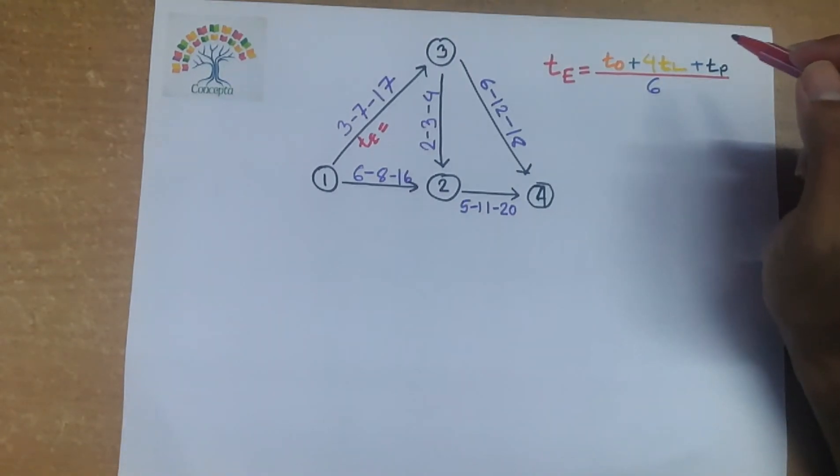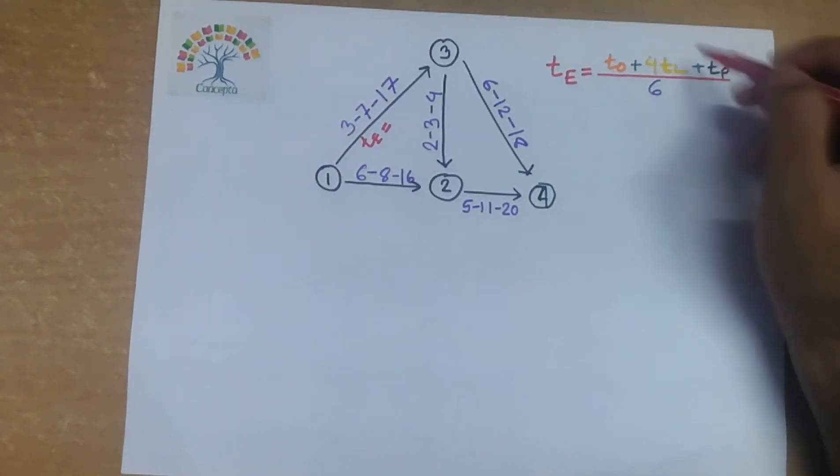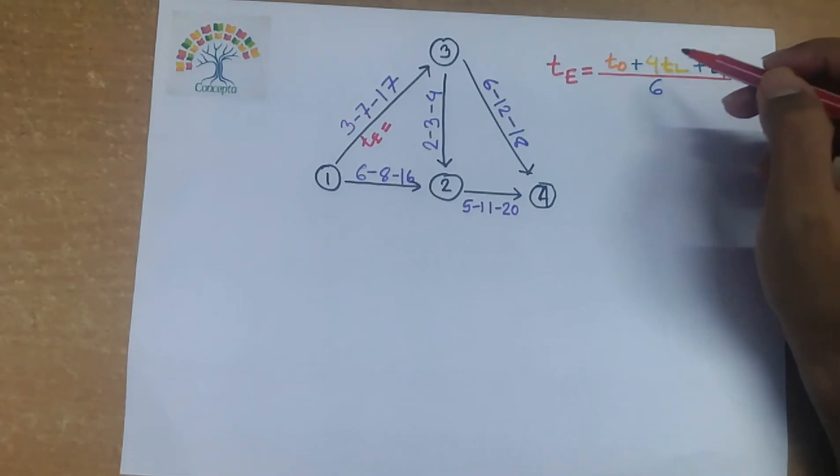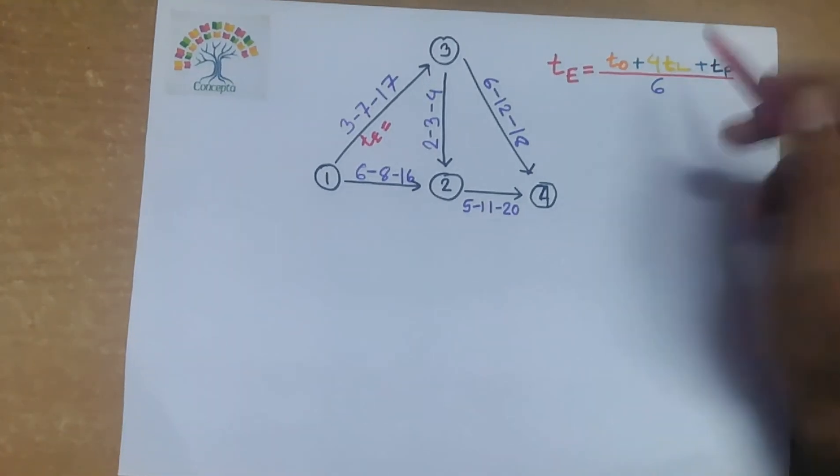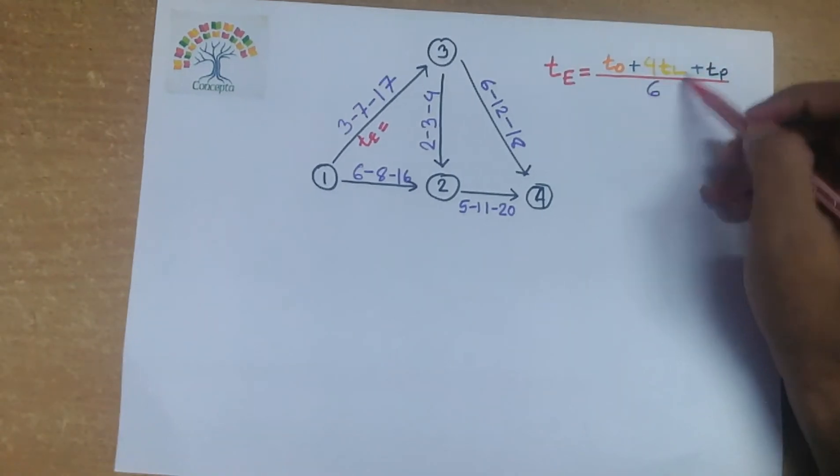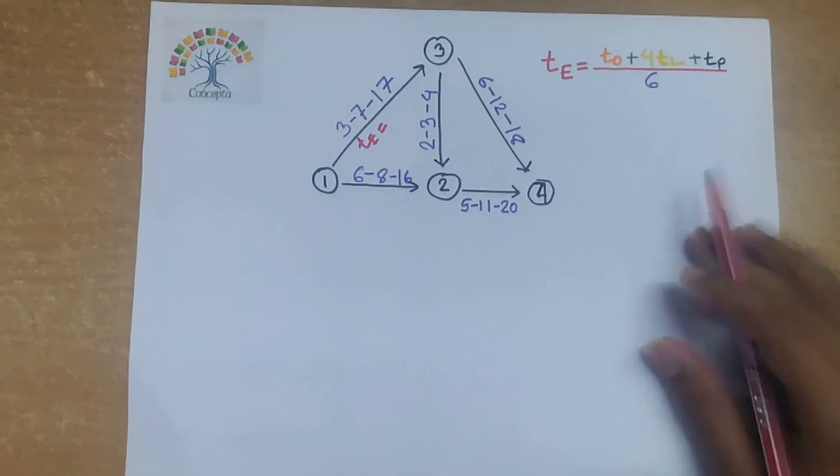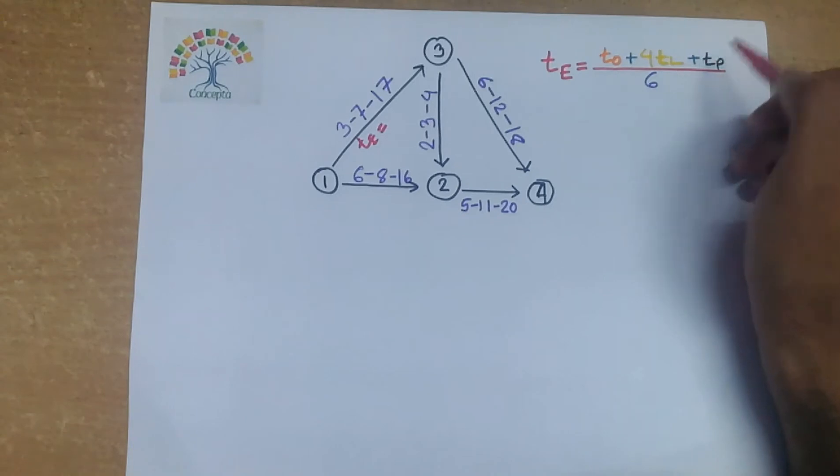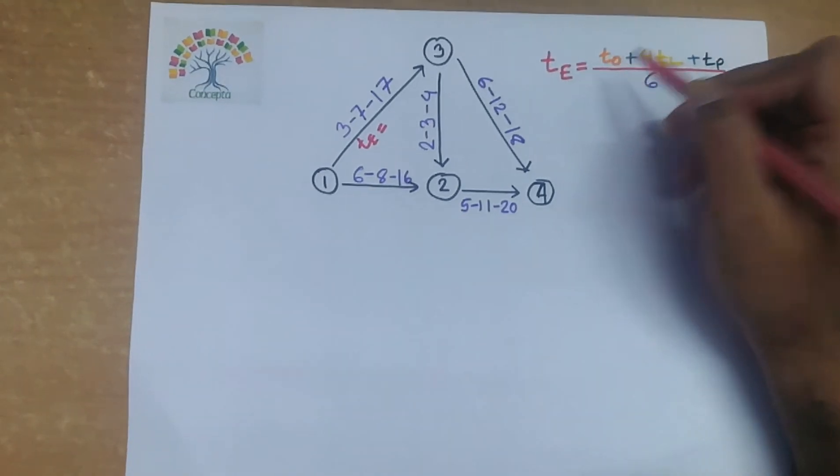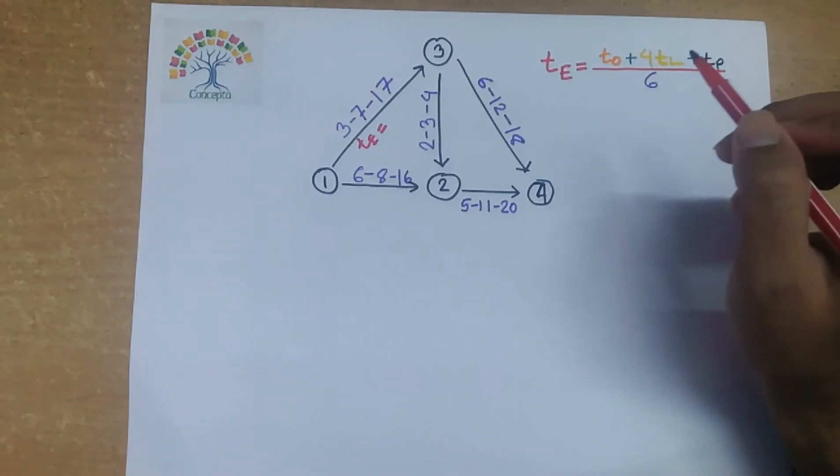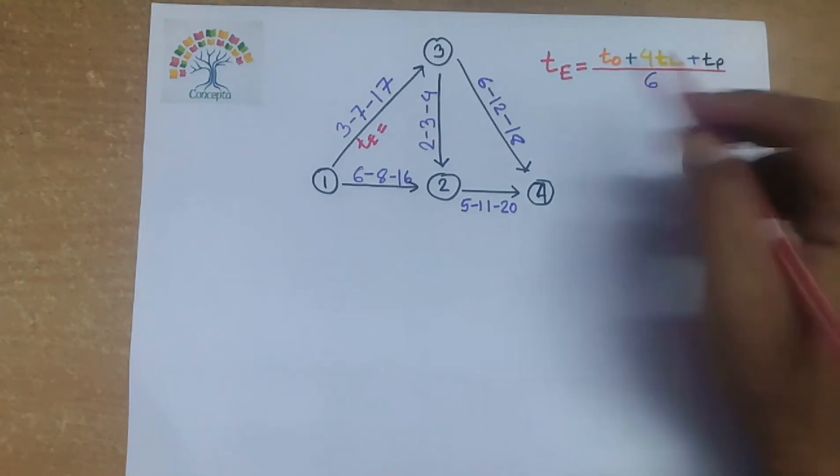Maximum people complete a work within this time, that is tl, so its weight is more compared with tp and t0. So coefficient 4 is written in front of tl, and there is a hidden coefficient 1 in front of tp and t0 as less number of people complete a work within this duration.